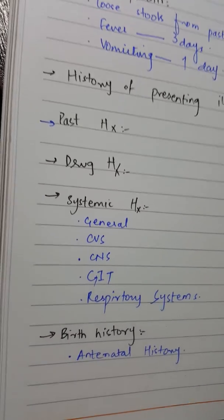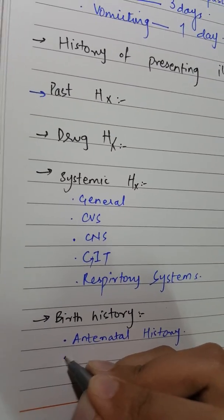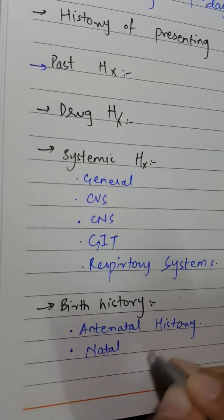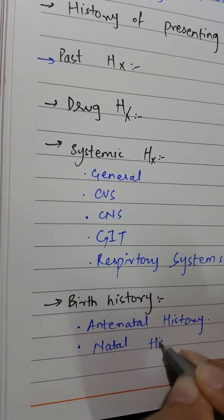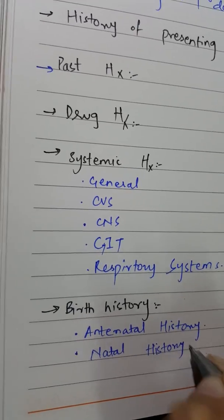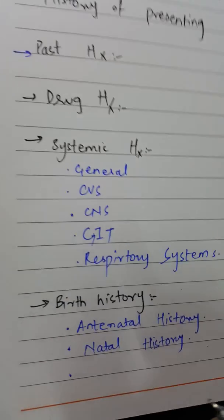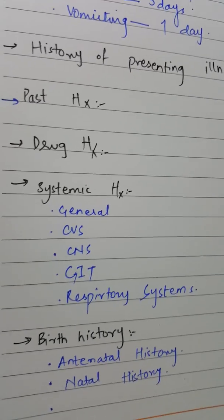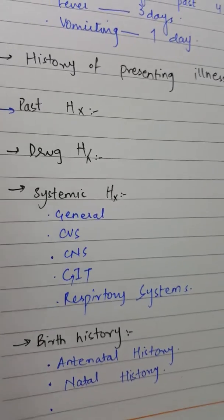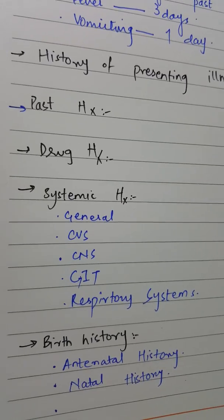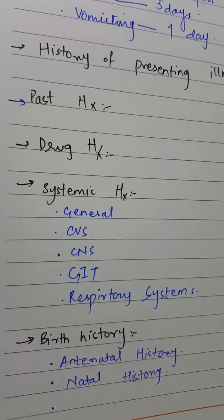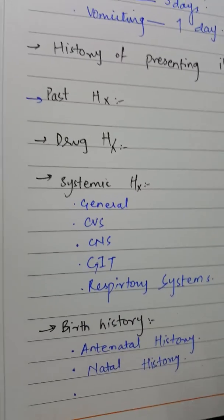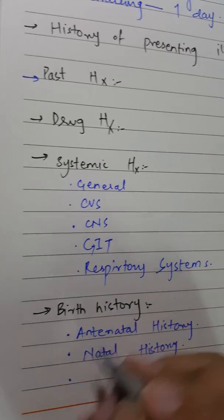The next subheading in birth history is natal history. In natal history, you ask if the baby was born through SVD (spontaneous vaginal delivery) or C-section. You also ask for the gestation time — whether the baby is full term, preterm, or post term. The normal gestation time is nine months, so you ask about that as well.